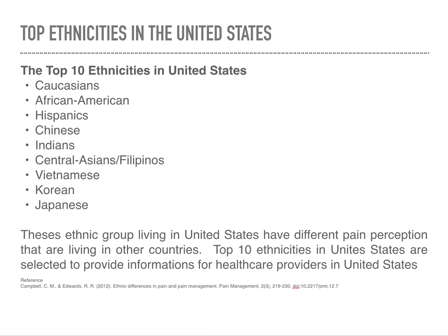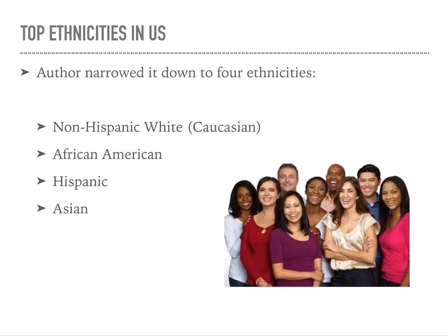I've chosen the top ethnicities in the United States. The top 10 ethnicities, according to the study, are Caucasians, African Americans, Hispanics, Chinese, Indians, Central Asians, Filipinos, Vietnamese, Korean, and Japanese. These ethnic groups living in the United States have different pain perceptions than those living in other countries, so they are selected to provide information for healthcare providers in the United States. However, for the purpose of this video, I've narrowed it down to four general ethnicities: non-Hispanic white Caucasian, African American, Hispanic, and Asian.